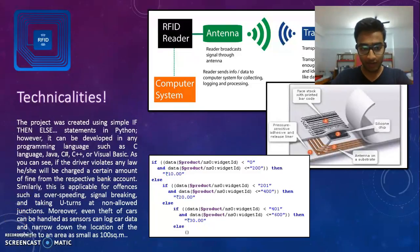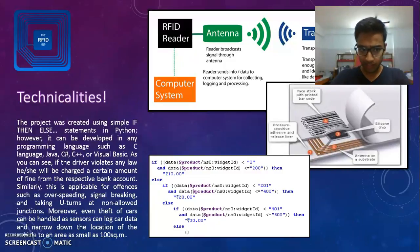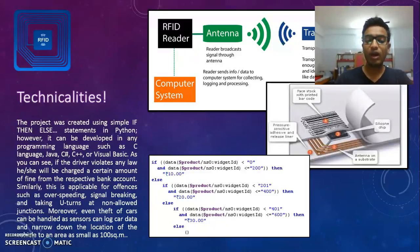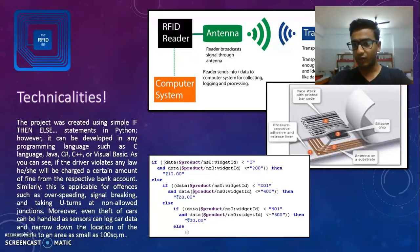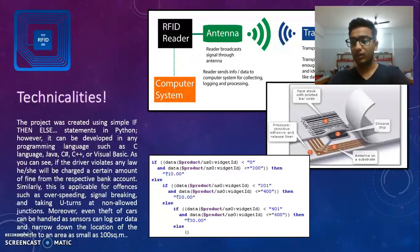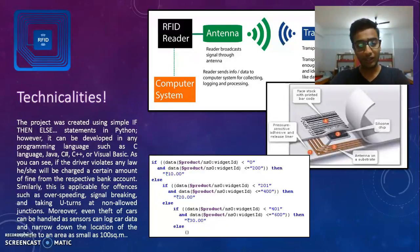If the driver violates any law, he or she will be charged a certain fine from their respective bank account. This is applicable for other offenses such as taking U-turns, over-speeding, signal breaking, etc. Moreover, even theft of cars can be handled, as sensors can log car data and narrow down the location of a vehicle to an area as small as 100 square meters. I have included one figure which shows how RFID works. The second figure depicts how small the RFID tag is and how easily it can be fitted in a driving license or in a car.